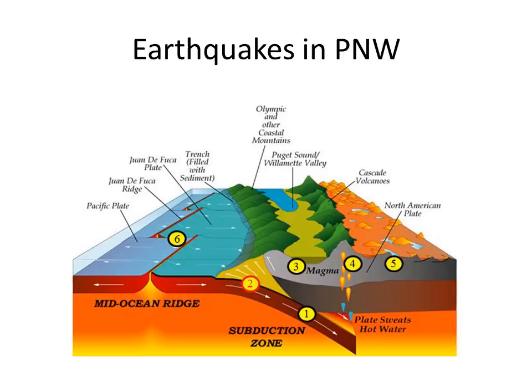You should be able to correlate the map view distribution of events to a cross-section. Briefly: number one are deep earthquakes in the subducting Juan de Fuca slab, including episodic tremor and slip events; number two are locations of megathrust, very destructive earthquakes; number three are earthquakes in the Willamette Valley within the crust; number four are earthquakes associated with volcanic activity along the Cascade volcanic belt; number five are earthquakes in the Basin and Range, typically associated with normal faults; and number six are earthquakes in the Juan de Fuca plate along fracture zones or at divergent settings.